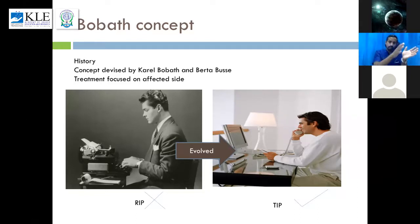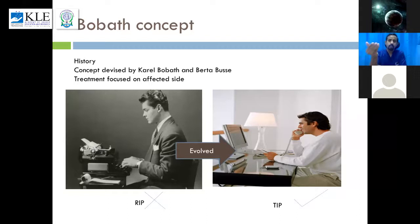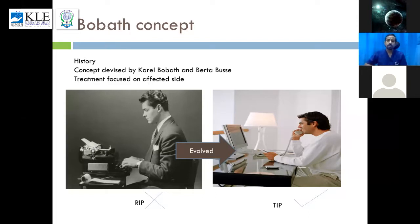From 1977 till now, the concept has really evolved over time. It was originally called Reflex Inhibiting Patterns, but that name gave a wrong impression — that Bobath cannot be used in flaccid patients with no tone, since you need baseline tone to inhibit something. That's why the name evolved to Tone Influencing Pattern, because these approaches have been used successfully in flaccid patients.